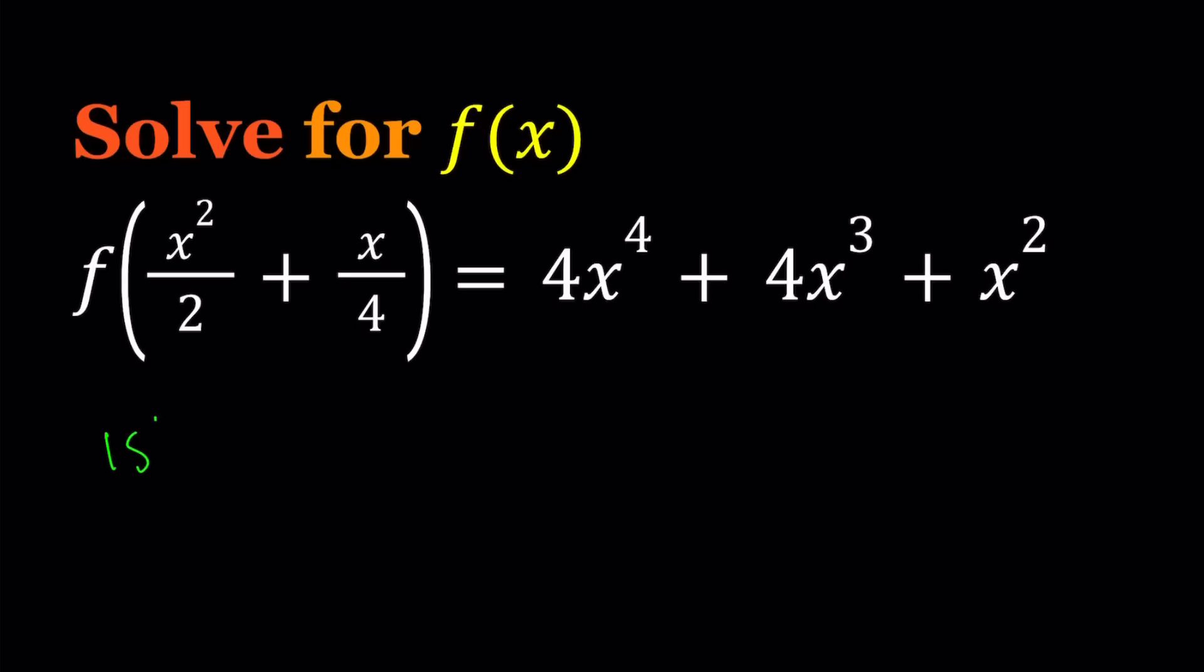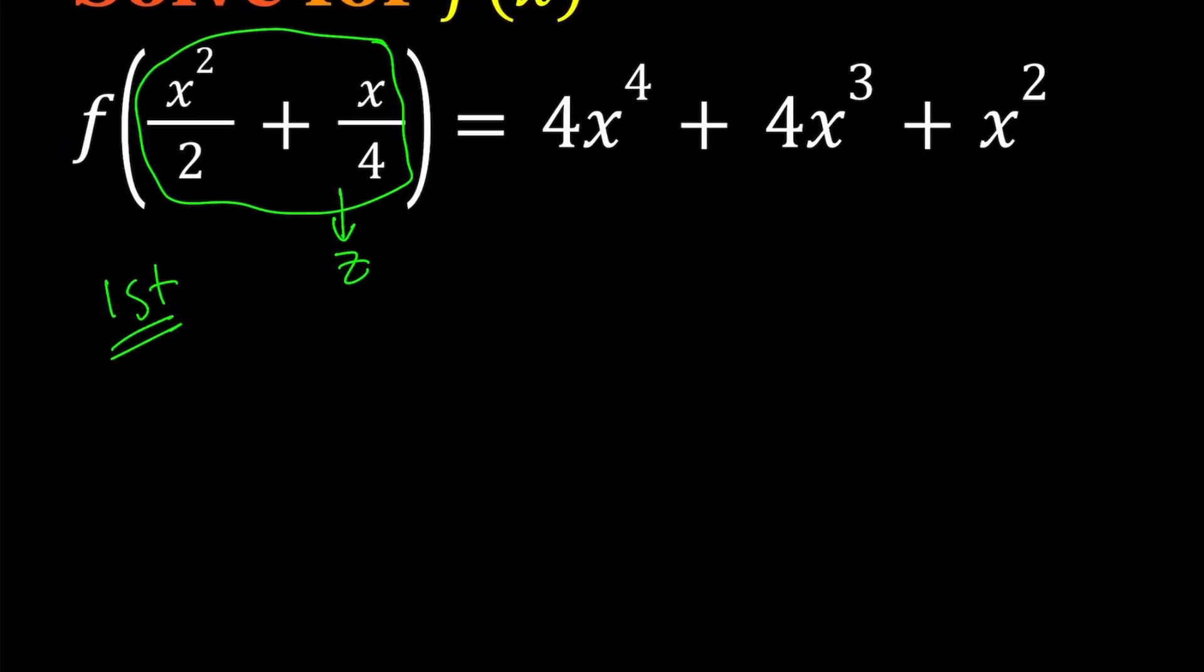My first method basically involves solving a quadratic equation. My goal is to solve for f of x, find an expression for f of x. So I'm going to take this whole thing here and set it equal to z. Now my goal is to find an expression for f of z and then turn it into f of x. So this means f of z equals the right hand side.